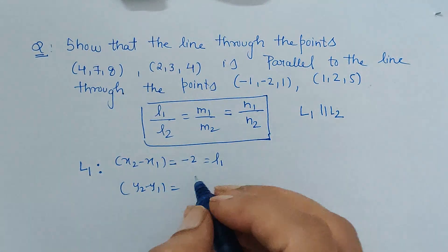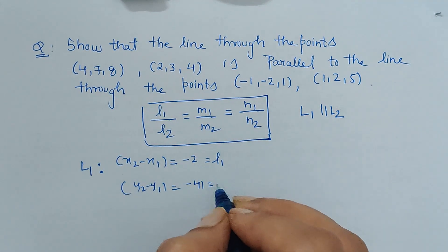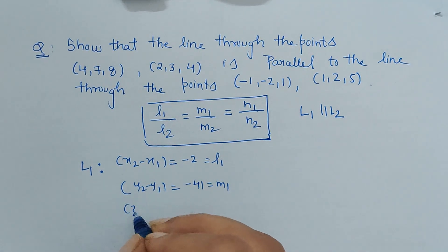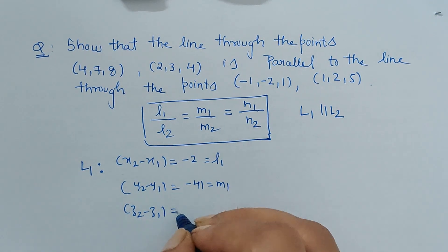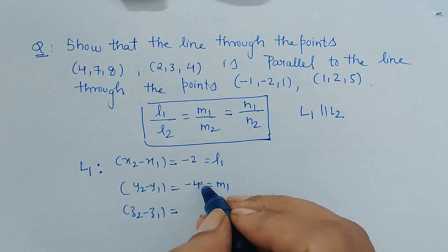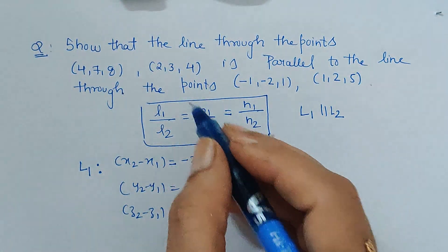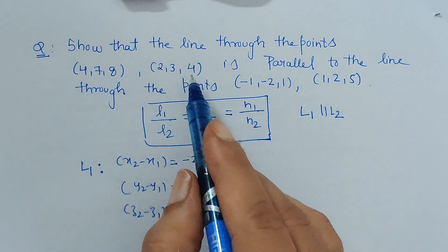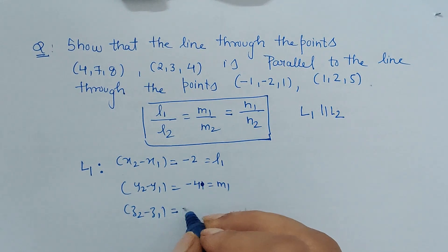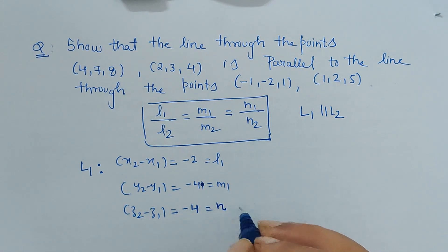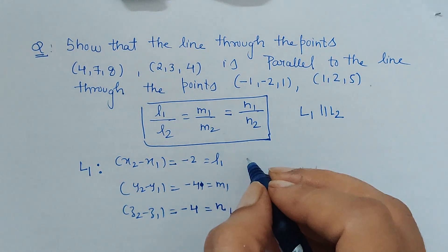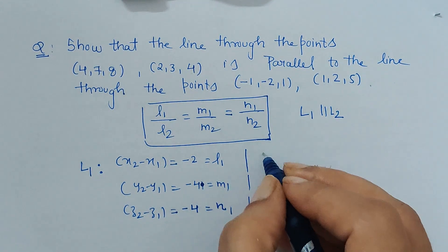This is m1. Similarly, z2 minus z1 is equal to 3 minus 7 is minus 4. And z2 minus z1, 4 minus 8 is minus 4 again, which is n1. Now similarly for line 2.